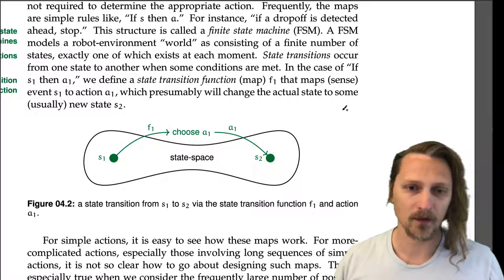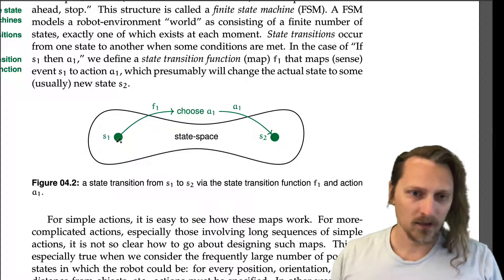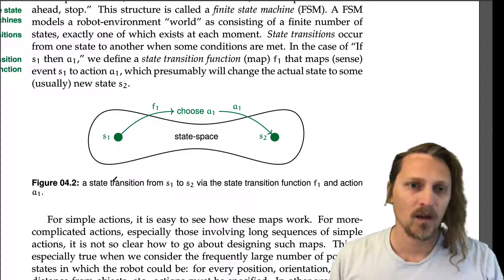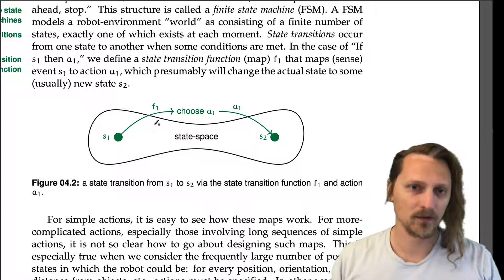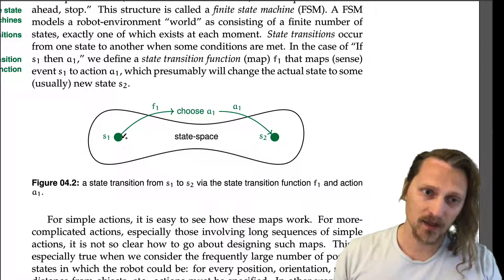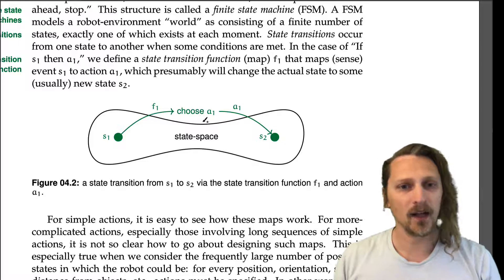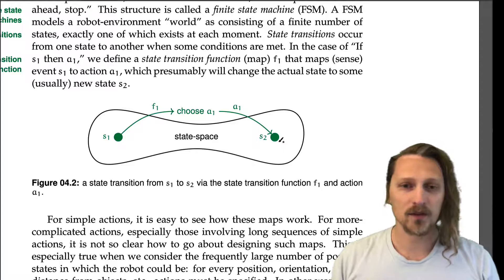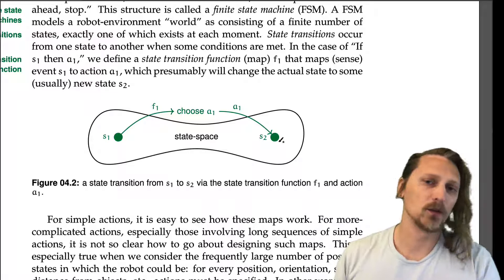Here's a diagram showing that. We have our state space. The robot and its environment are in one of these states, S1. With the map F1, the state transition function, when you're in state S1, we map via F1 to action A1, which then hopefully is going to change the state of the system from S1 to S2.